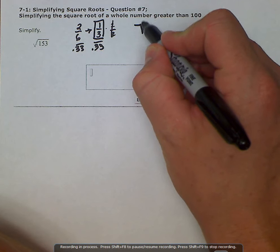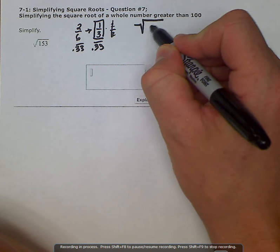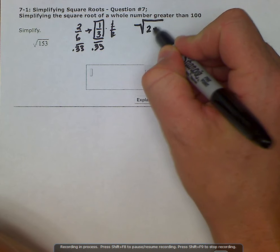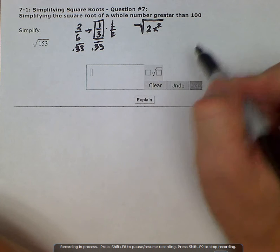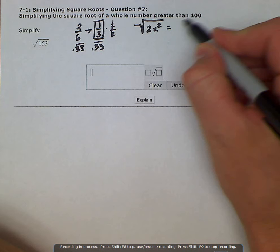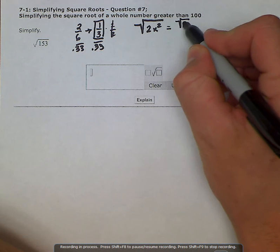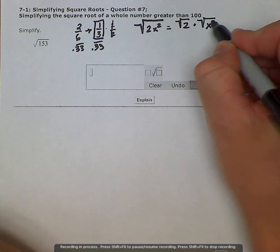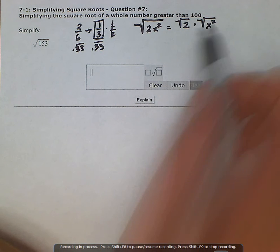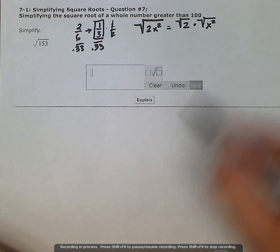If we had, for example, the square root of 2x squared, we can rewrite this as an equivalent expression as the square root of 2 times the square root of x squared. Because when we're multiplying radicals, we just multiply the radicands, and then we could resolve these separately.